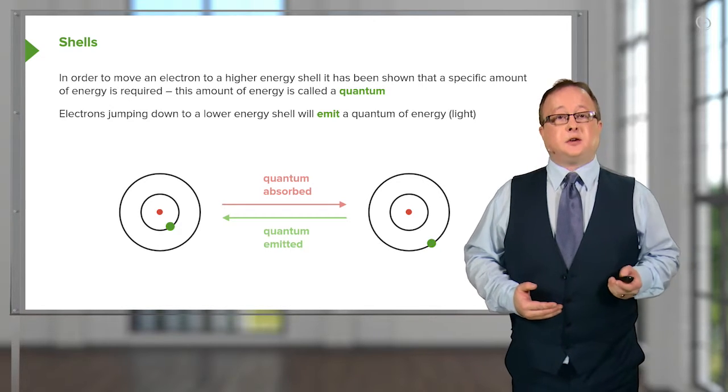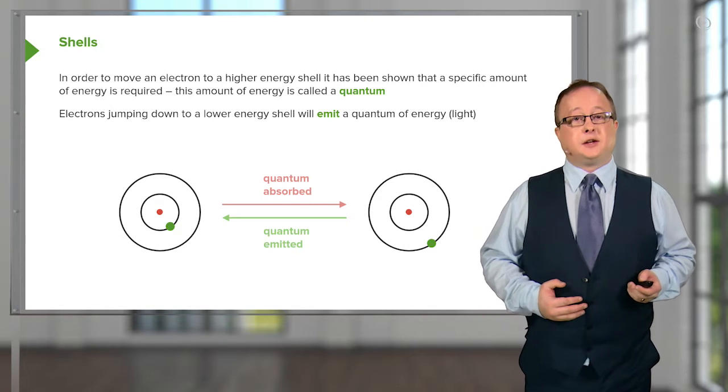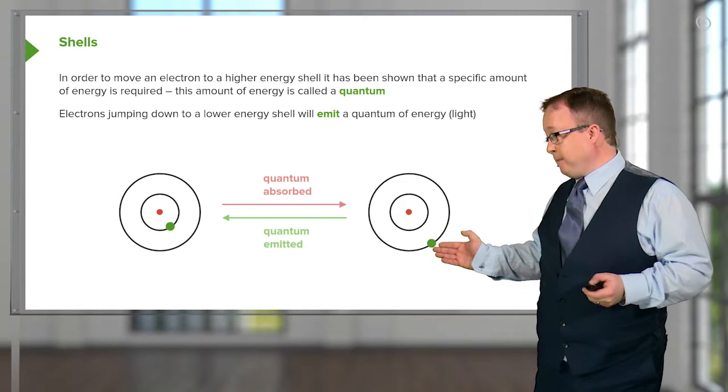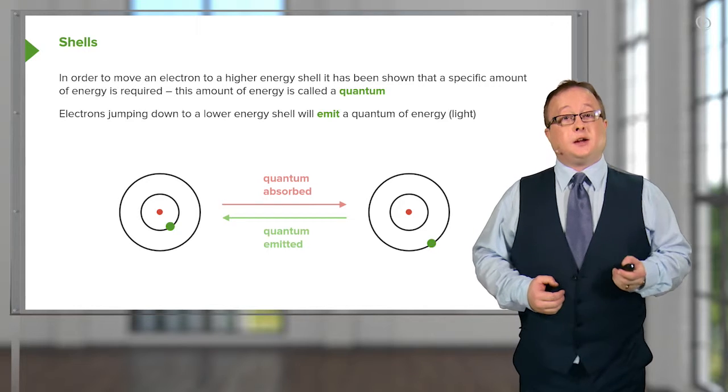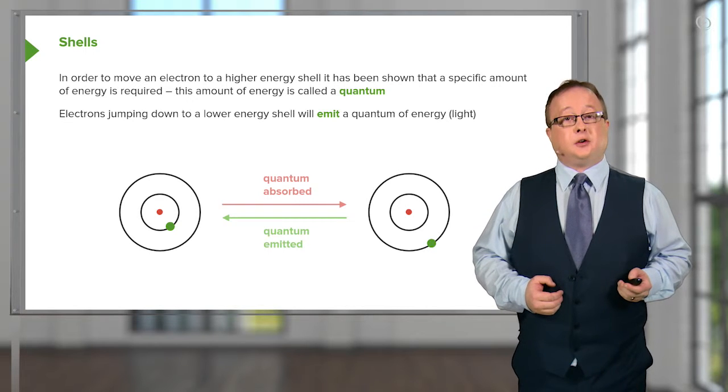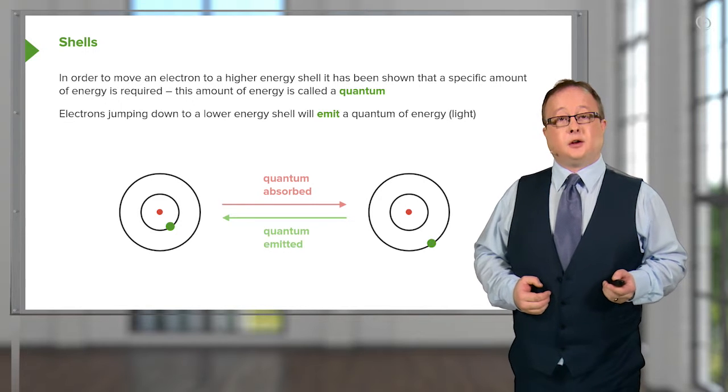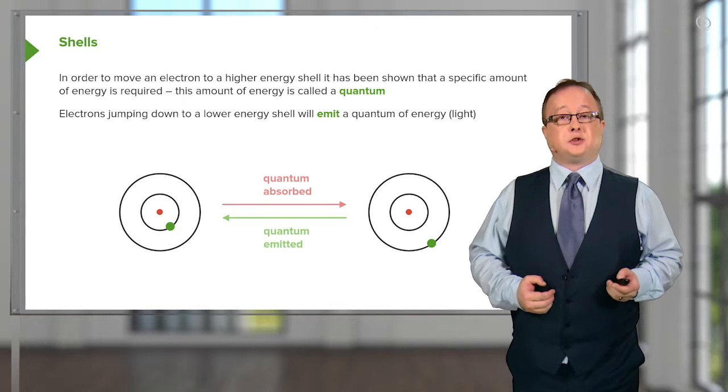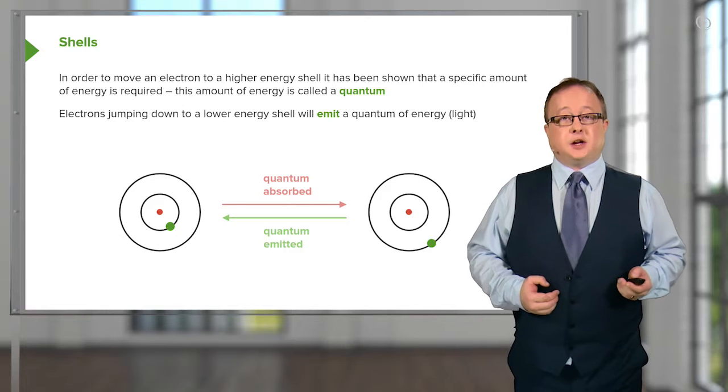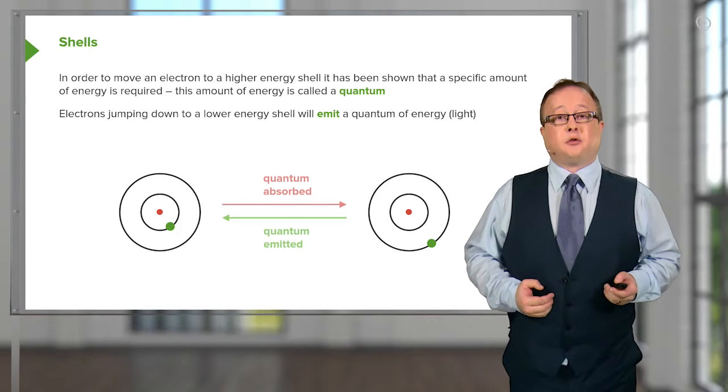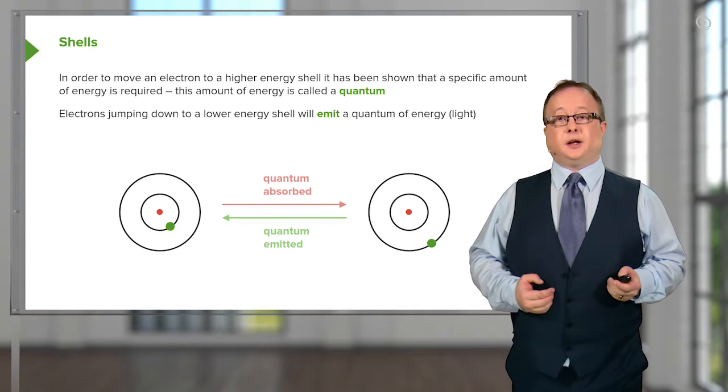In the case of our idealized atom, which is shown on the board here, you'll see that we have movement of an electron from a shell nearest the nucleus to a shell further from the nucleus when a quantum of energy is absorbed. This energy can be light energy, for example, or it could theoretically be heat energy.